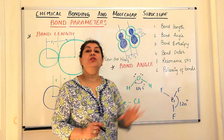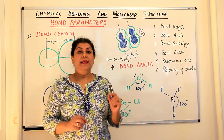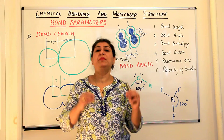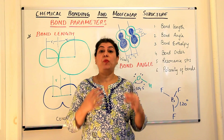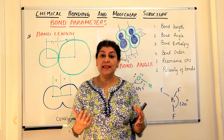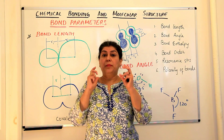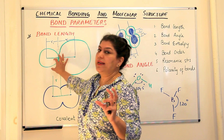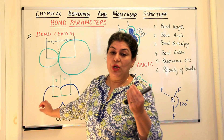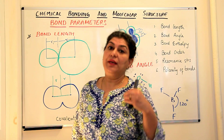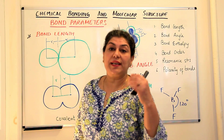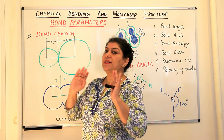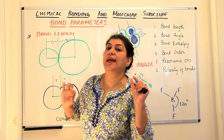The first one is bond length. We are dealing with atoms and molecules in chemistry which are extremely small — so small that it is impossible to directly study or see them. So we use certain instruments and techniques like X-ray spectrography, electron diffraction, X-ray diffraction, or spectroscopy, and by these different methods we are able to get an idea of atoms or molecules at that size.